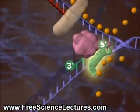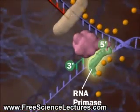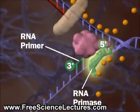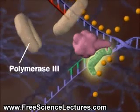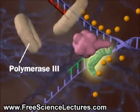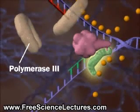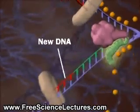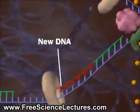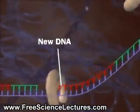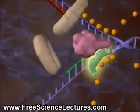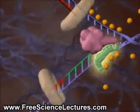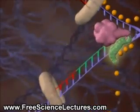First, an RNA primase lays down an RNA primer. Then, DNA polymerase 3 lays down new DNA. The process repeats again and again.